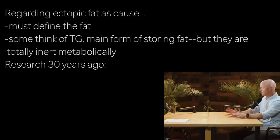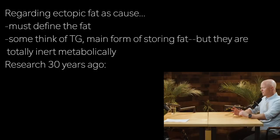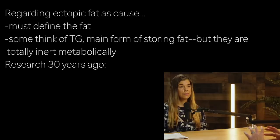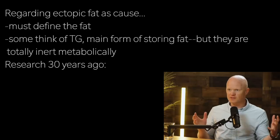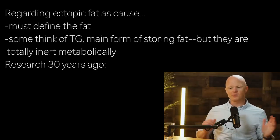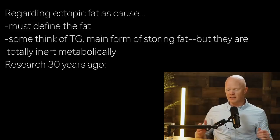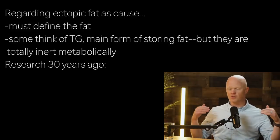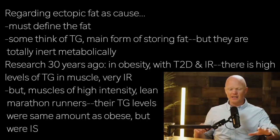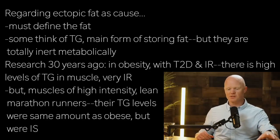None of those touch on the ectopic fat idea, which is very important and has a lot of nuance. We have to define the fat — specifically, which of the many hundreds of thousands of types of lipid molecules within a cell actually matter to insulin resistance. Some people think of just triglycerides, the main form of stored fat — and yet triglycerides are totally inert metabolically. Brett Goodpasture and David Kelly, about 30 years ago, described the athlete's paradox: in obesity with type 2 diabetes and insulin resistance, muscle biopsies show really high levels of triglycerides in the muscle, and those individuals are very insulin resistant.